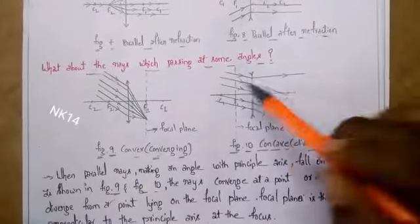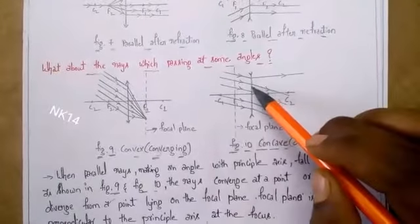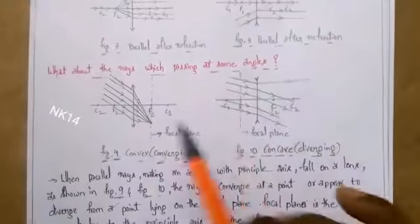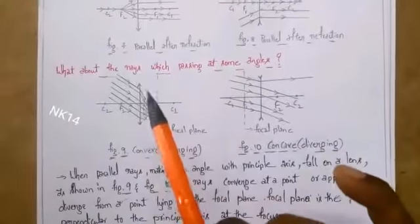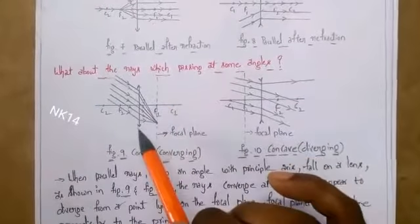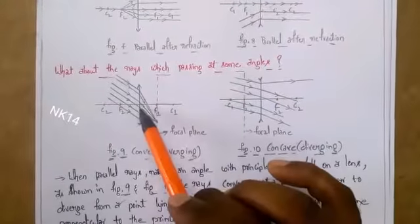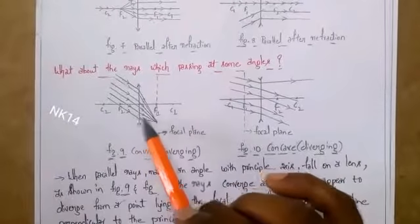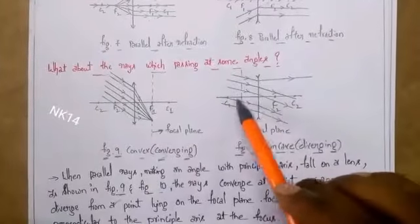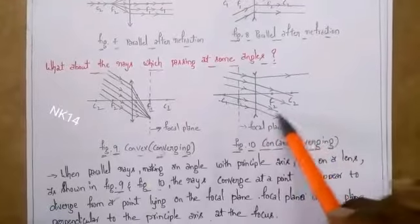Coming to the concave lens, rays that are parallel before refraction will get diverged after refraction. So, for any rays passing at some angle toward a lens — whether convex or concave — after refraction through a convex lens they will converge, and after refraction through a concave lens they will diverge. This is the general principle.